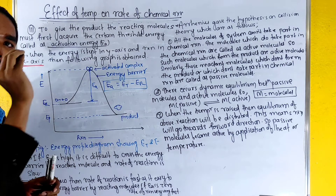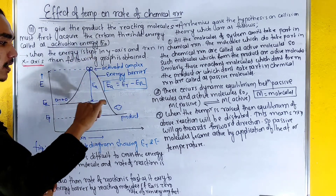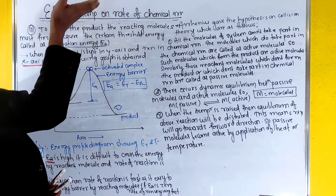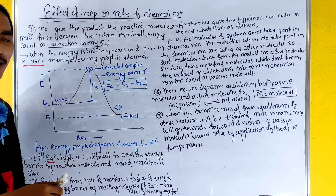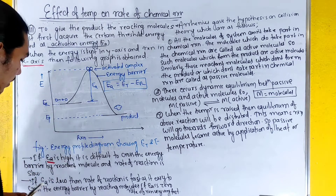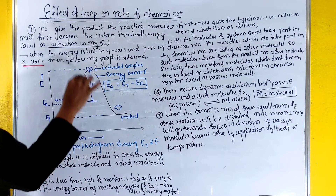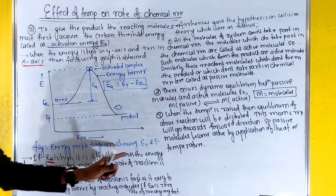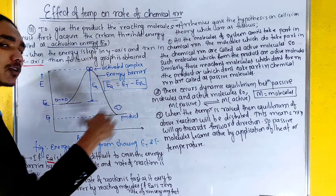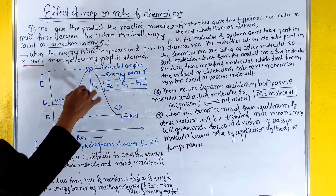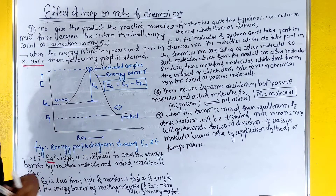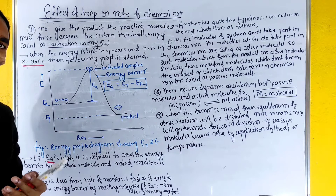This is the activated complex. Activated complex leads to product formation. We have a certain amount of energy, and this is the Ea — the activation energy. When Ea is high, it is difficult to cross the energy barrier by the reactant molecules, so the rate of reaction is lower and product formation is less. When Ea is very low, the rate of reaction is faster.